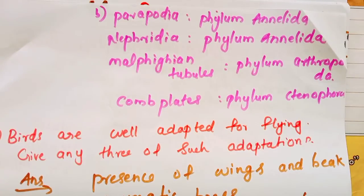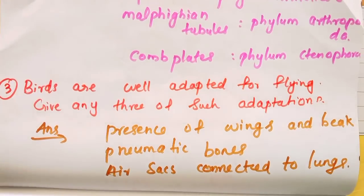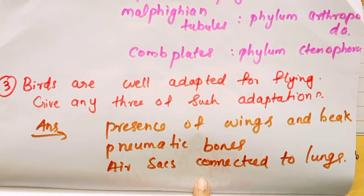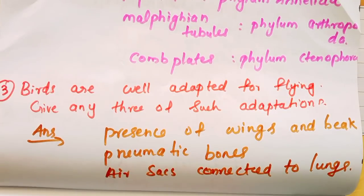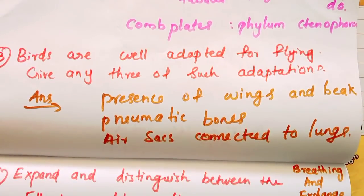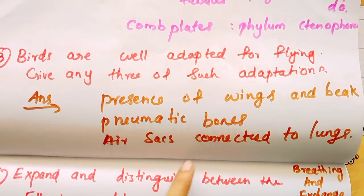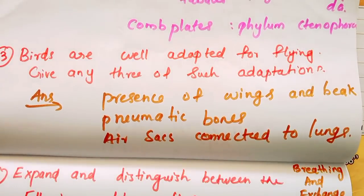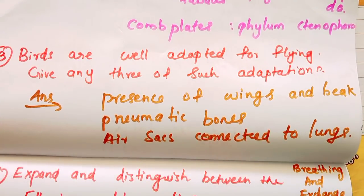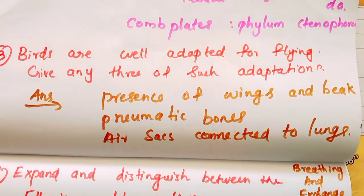Now let's talk about this chapter. Birds are well adapted for flying — give any three such adaptations. The presence of wings, beak, pneumatic bones, and air sacs connected to lungs are three characteristics that help birds fly.